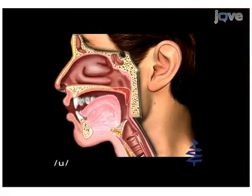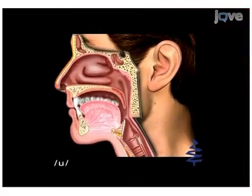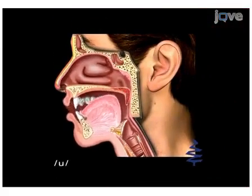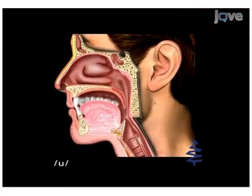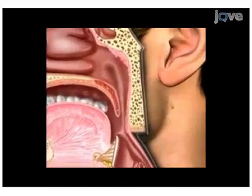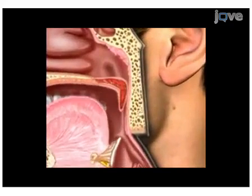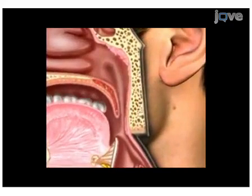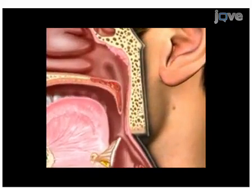The resonatory subsystem, comprised of the muscles of the velum and pharynx, is used to prevent air from escaping through the nose and to distinguish oral from nasal speech sounds.